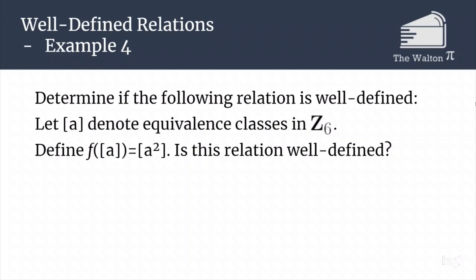The last relation we are going to check is this relation from Z6 to Z6, so we are only dealing with equivalence classes in one space — not going between spaces. If we define f([a]) = [a²], the question is: is this relation going to be well-defined? Take a moment to try and figure out if this is going to be a well-defined relation.